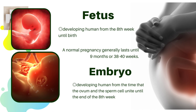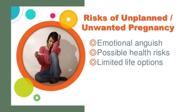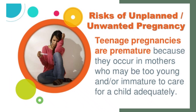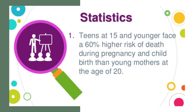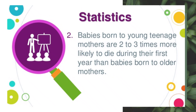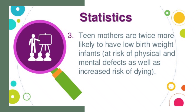Risks of unplanned or unwanted pregnancy include emotional anguish, possible health risks, and limited life options. Teenage pregnancies are premature because they occur in mothers who may be too young or immature to care for a child adequately. Statistics show that teens 15 and younger face a 60 percent higher risk of death during pregnancy and childbirth than young mothers at age 20. Babies born to young teenage mothers are two to three times more likely to die during their first year, and teen mothers are twice as likely to have low birth weight infants at risk of physical and mental defects.